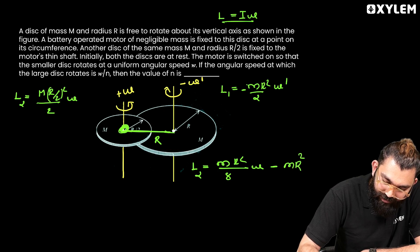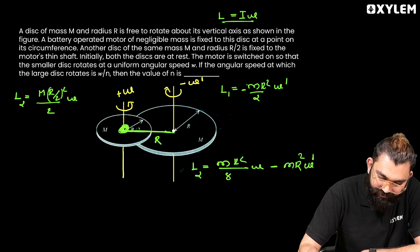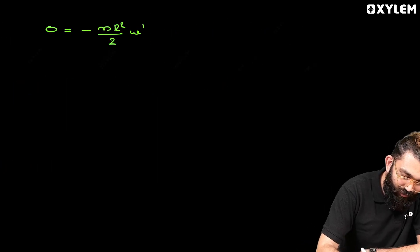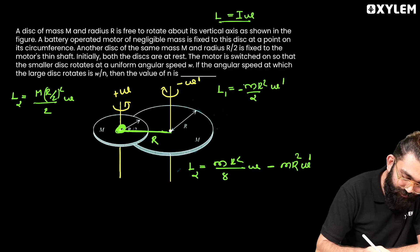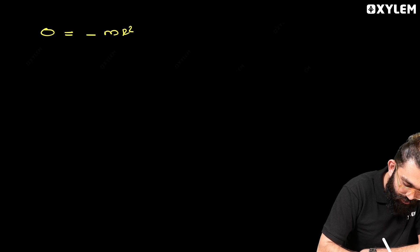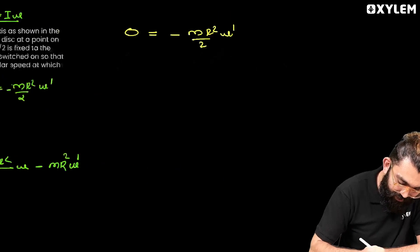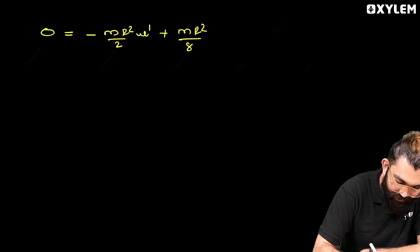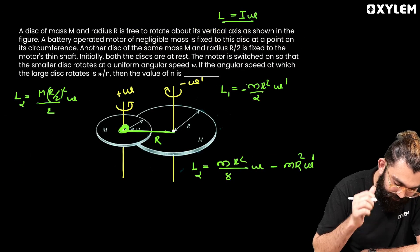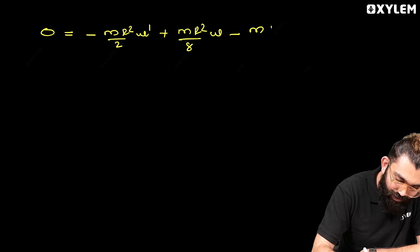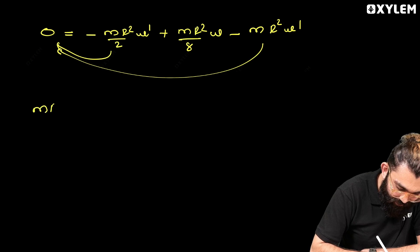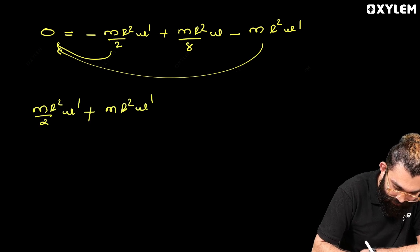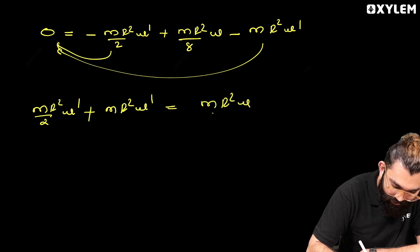The orbital contribution is mR² × omega_dash (negative direction). Applying conservation of angular momentum, the net angular momentum equals zero: 0 = −MR²/2 × omega_dash + mR²/8 × omega − mR² × omega_dash. Rearranging the negative terms: MR²/2 × omega_dash + mR² × omega_dash = mR²/8 × omega, which simplifies to 3mR²/2 × omega_dash = mR²/8 × omega.